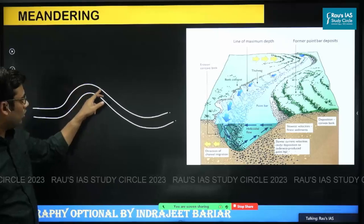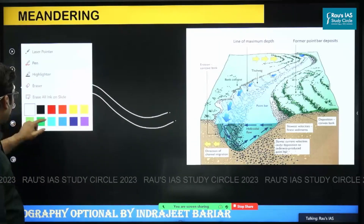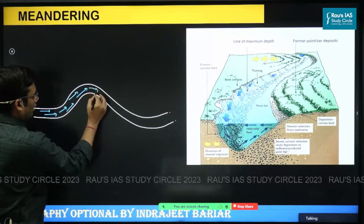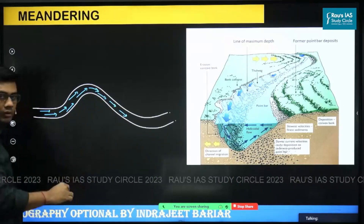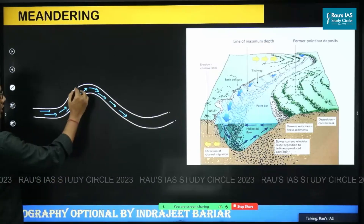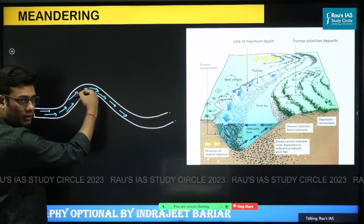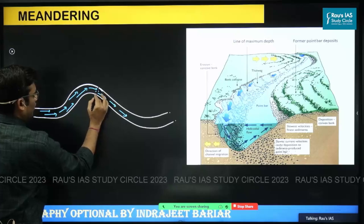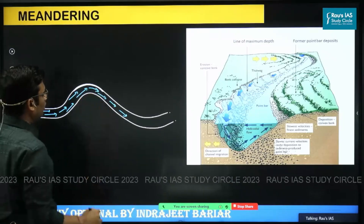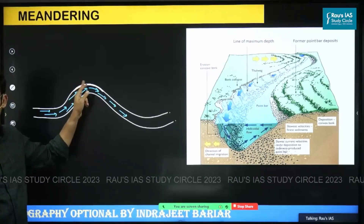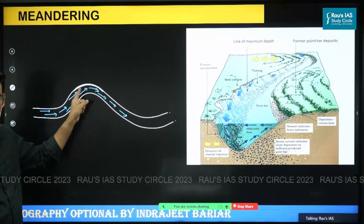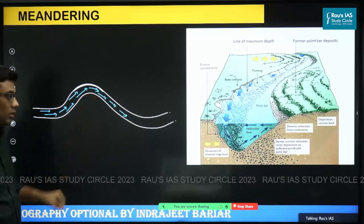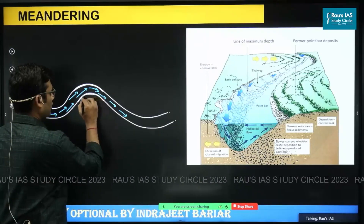If I take a look at this part of the meander, how the movement of the water is going to be — the movement of water is going to be something like this. In this part of the meander, this side of the bank I can call the concave side with respect to the river. If you are in the river channel, this would appear to be concave and this would appear to be convex. So this is the convex side and this is the concave side.